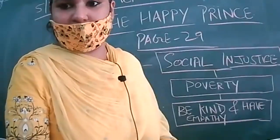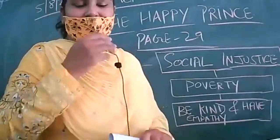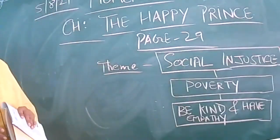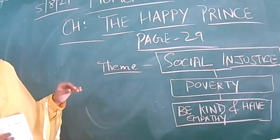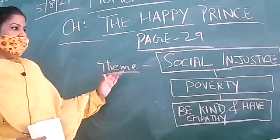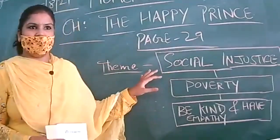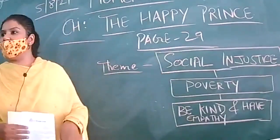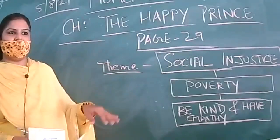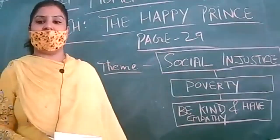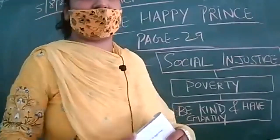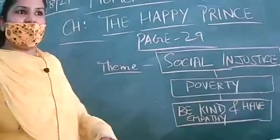Good morning to all the students. We are going to continue this chapter from page number 29. Yesterday I just introduced the Happy Prince, and based on the theme of social injustice — meaning social inequality — when all segments of society are not treated equally, that is called social injustice.